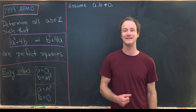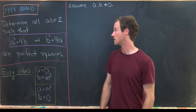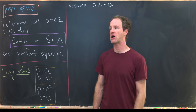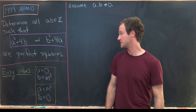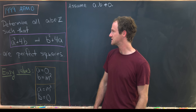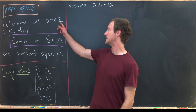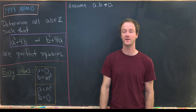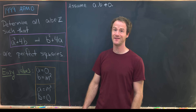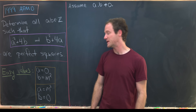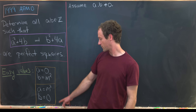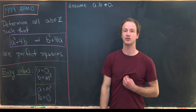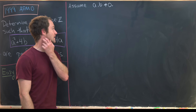Here we have a nice problem that appeared on the 1999 Asian Pacific Math Olympiad. It looks like a straightforward number theory problem, but we will approach it using polynomials — and there's nothing about polynomials in the statement. We want to determine all integers a and b such that a squared plus 4b and b squared plus 4a are both perfect squares. If a is 0, then b equals m squared, and if b is 0, then a equals m squared — giving two infinite families of easy solutions.